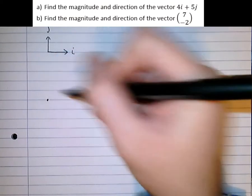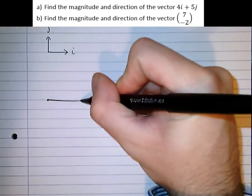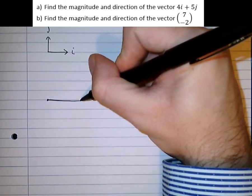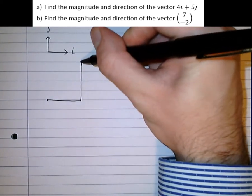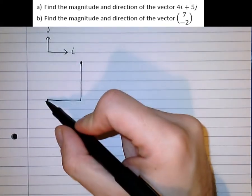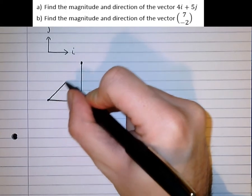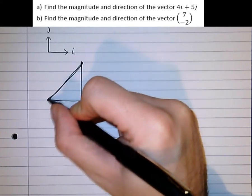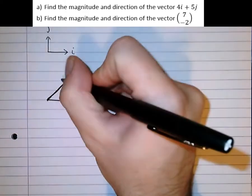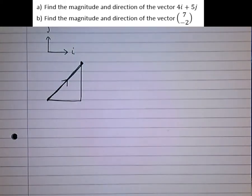Starting at this point here, 4i takes us 4 steps in the i direction, and 5j takes us 5 steps in the j direction. So we move from here to here. The resulting vector is the direct route between these. This vector here is called the resultant.